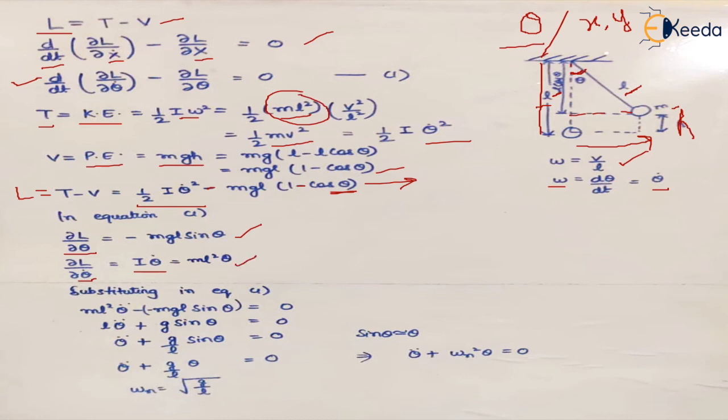Now the equation says that the time derivative of this differential with respect to velocity. So this factor's time derivative will become ml square theta double dot minus, which is minus mgl sin theta. So it becomes positive and this is the equation that we get.